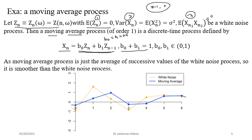The moving average process is just the average of successive values of the white noise process, so it is smoother than the white noise. You can see that the orange sample path of white noise has more kinks in it, but after applying the moving average, the number of kinks is reduced. Moving average smooths out the given random process — that is the key benefit. It is a linear time invariant system coming from a difference equation.